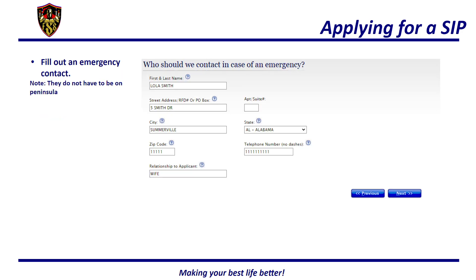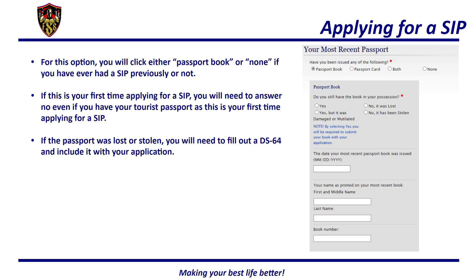After, you will need to fill out an emergency contact — note, they do not have to be on the peninsula. Fill out the first and last name, street address, city, state, zip code, telephone number, and relationship to the applicant. After clicking next, you will be asked if you have ever been issued a passport book, passport card, both, or none. If this is your first time applying for a SIP, you will answer no, even if you have a tourist passport. If you click yes and the passport was lost or stolen, you will need to fill out a DS-64 and include it with your application. If you still have the passport, fill out the date your most recent passport was issued, your name as printed on it, and the book number.